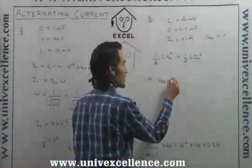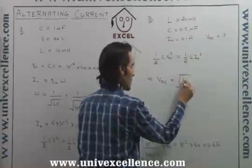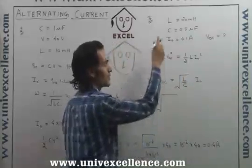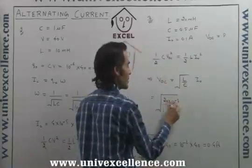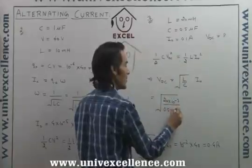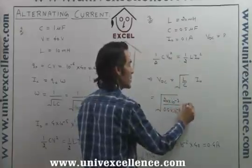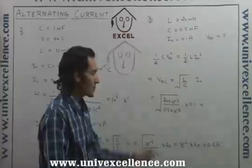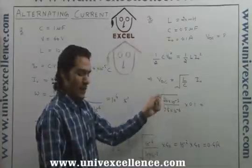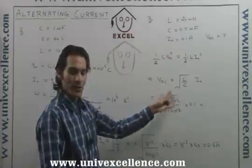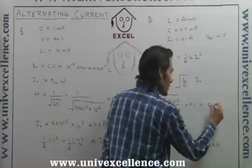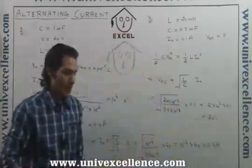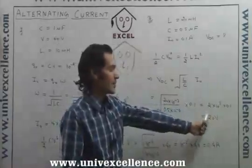This implies V_naught equals root(L/C) times I_naught. Substituting L = 20 × 10^-3 and C = 0.5 × 10^-6 gives root(4 × 10^4), which is 2 × 10² = 200. Multiplying by I_naught = 0.1 ampere gives 20 volts. So the greatest potential difference across the capacitor is 20 volts.